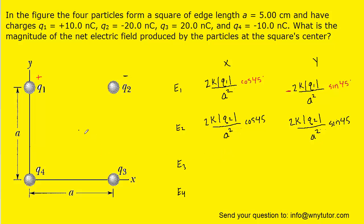Moving along to E3, we use the same expression. Q3 is positive, so the hypothetical test charge at the center would be repelled away from Q3, pushed in the upper-left direction. The x component points to the left — so it's negative — and the y component points straight up — so it's positive. We fill in the x and y components using Q3, with a negative sign on x and positive on y.